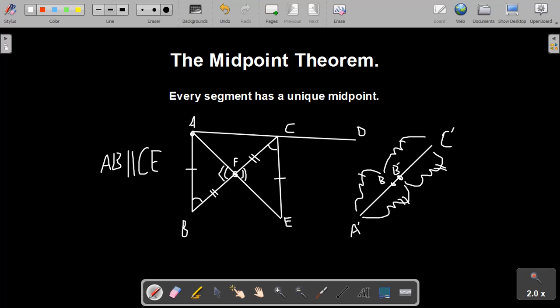So if we set up some inequalities, we'll know that A prime, B prime, the segment, is greater than or equal to B prime, which is congruent to the segment B prime, C prime, which is greater than or equal to the segment B prime, C prime, which is congruent to A prime, B prime.